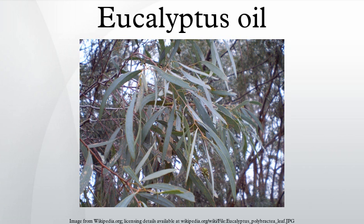Australian aboriginals used eucalyptus leaf infusions as a traditional medicine for treating body pains, sinus congestion, fever, and colds. Dennis Considen and John White, surgeons on the First Fleet, distilled eucalyptus oil from Eucalyptus piperita found growing on the shores of Port Jackson in 1788 to treat convicts and marines.